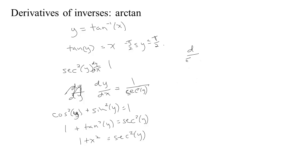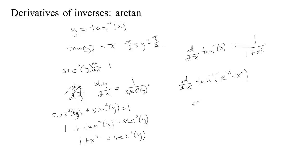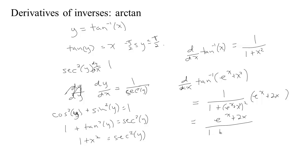That means that the derivative with respect to x of the arctan — that would be dy/dx — is 1 over the secant squared, which is 1 over 1 plus x squared. So if we had to take the derivative with respect to x of, say, the tangent inverse of e to the x plus x squared, then we would get the derivative of the outside evaluated at the inside — plugging the inside in — times the derivative of the inside. The derivative of e to the x is e to the x, and the derivative of x squared is 2x. So we get e to the x plus 2x, all over 1 plus the quantity e to the x plus x squared, all squared.